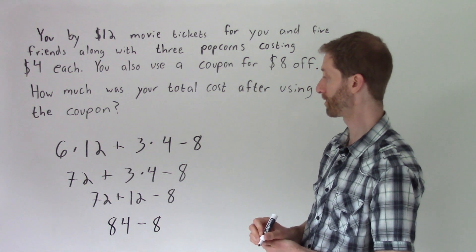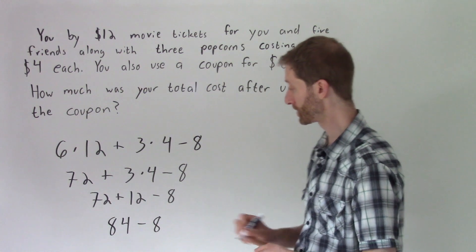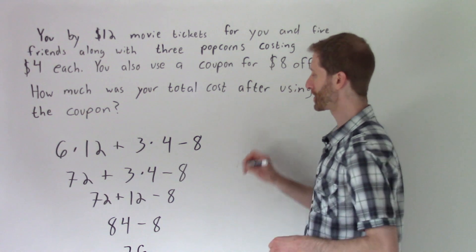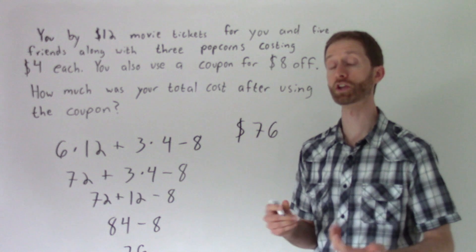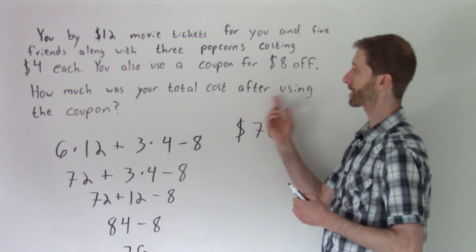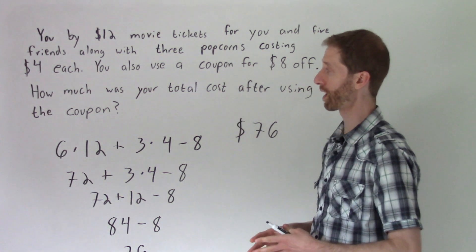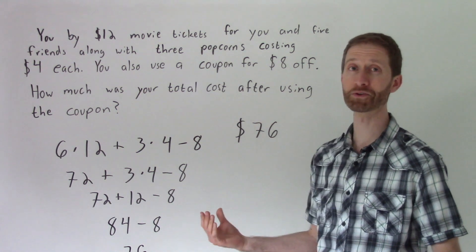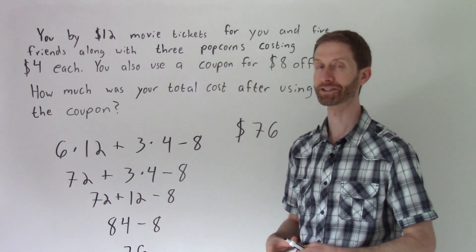And let's see what 84 minus eight is going to give us. 84 minus eight is going to give us 76. 76 what though? Let's be clear here. We just spent $76 at the movies. And some teachers are going to make you write that as a sentence, which is totally fine. So you would say the total cost after using the coupon is $76. So a little order of operations word problem, a little practice of translating the information given to you in a word problem. I had fun doing it with you. I hope you had fun coming along with this order of operations ride. See you next time.